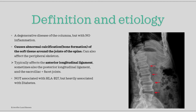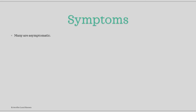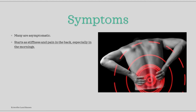Lastly, the median age for diagnosis of the disease is about 50 to 60 years old. Now to symptoms. A majority of the patients are actually asymptomatic. If symptoms do occur, they typically start as stiffness and pain localized to the back, which is especially prominent in the mornings. The pain can be highly variable, ranging from just a mild annoyance to physically incapacitating the patient.